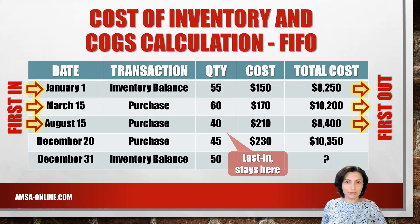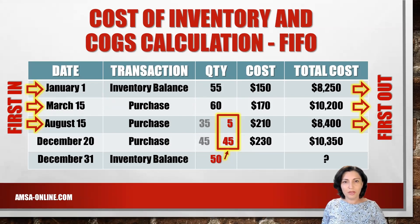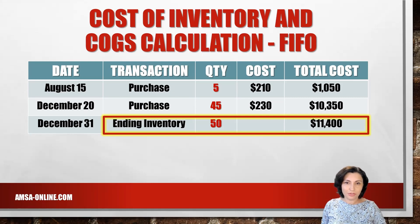First-in, first-out — last-in stays here. This means that the cost of the 50 units in ending inventory is composed of 45 units from the purchase made on December 20th at $230 per unit, plus 5 units from the purchase made on August 15th at $210 per unit. Adding the cost of 5 units at $210 ($1,050) to the $10,350 for December 20th units, the ending inventory cost using FIFO is $11,400.